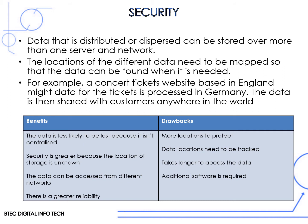With regards to security, if we have data that's distributed or dispersed, it means it can be stored over more than one server and across a network. The locations of the different data need to be mapped out so the data can be found when needed. For example, on a concert tickets website based in England, data for tickets might be processed in Germany and shared with customers anywhere in the world. The benefits of distributed data are that it's less likely to be lost because it's not centralized, the security should be greater because the storage location is not known, and data can be accessed from different networks, giving greater reliability.